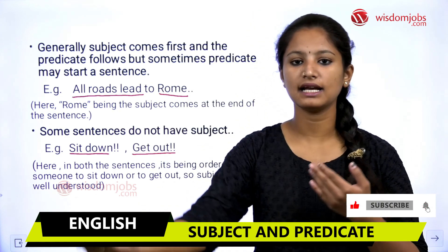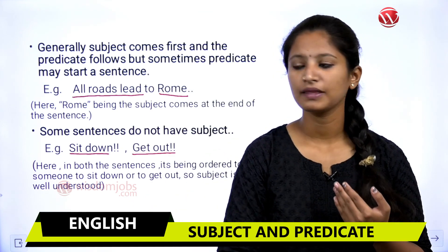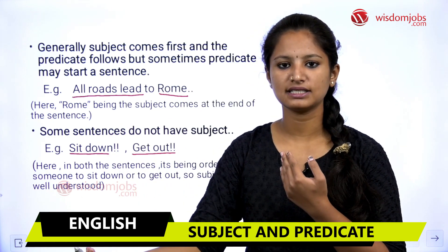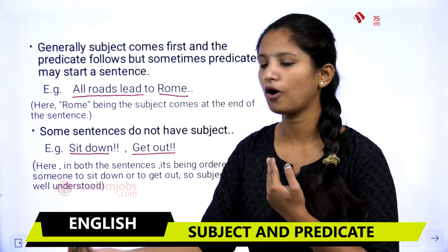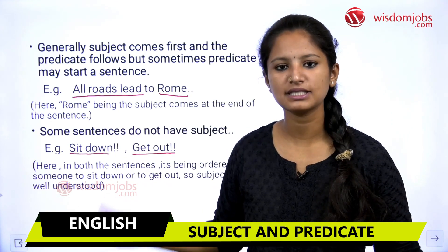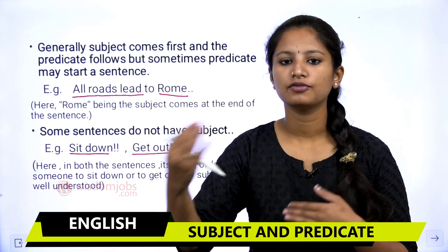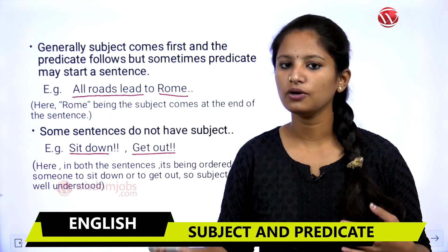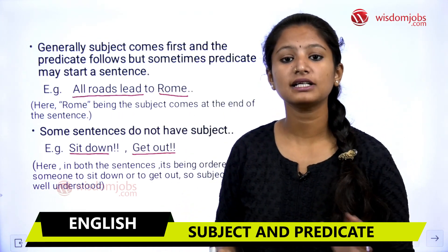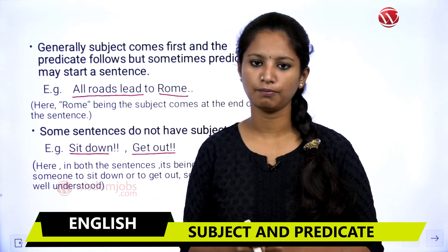In commands like 'Sit down' and 'Get out,' we do not use a subject because we are directly addressing a person — we directly address a noun. We order them to sit down or get out, and it is understood to whom we are referring. This is how subject and predicate work together in sentence formation.